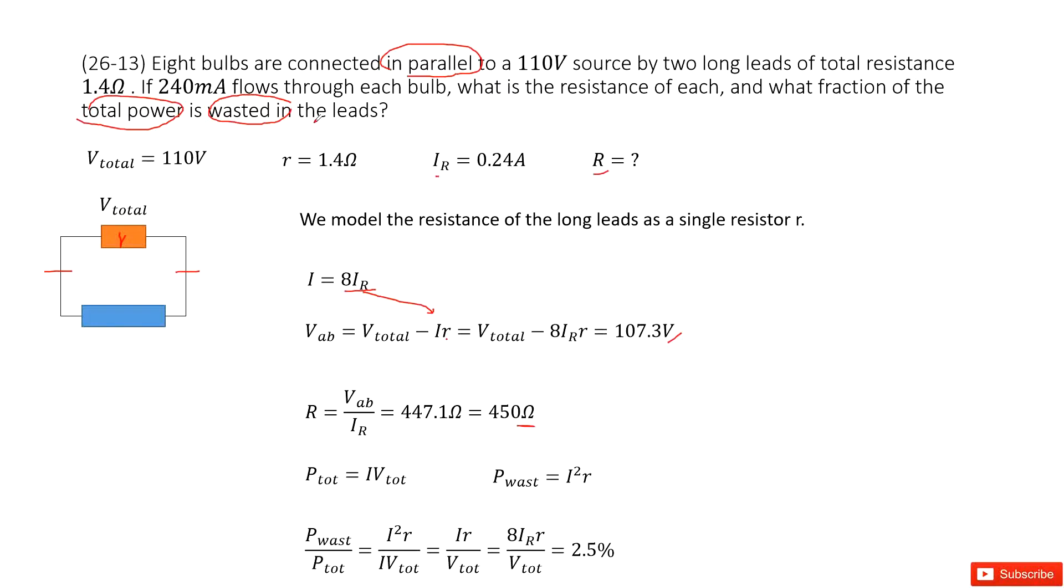And then, the wasted power in leads, that is the current squared times internal resistance. And then, we want to know what fraction. So, we use the power wasted divided by the power total. And then, you can see current can be cancelled. You get the function that looks like this one. Input the given quantities is just 2.5%. Thank you.